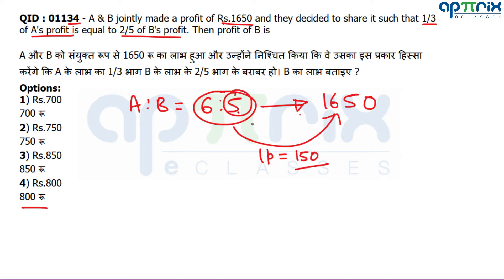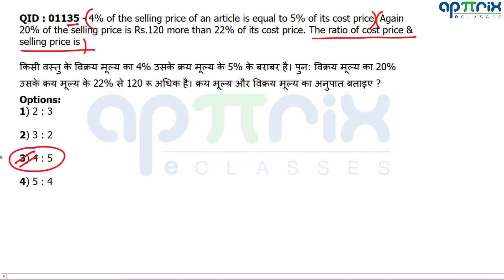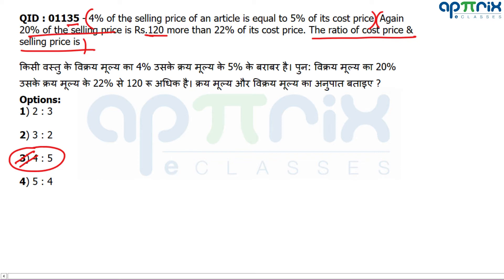B's profit = 5 × 150 = 750. Question number 35: 20% of SP is 120 more than 22% of cost price. The ratio of cost price to selling price — this is a very easy question. The direct answer is 4:5. The second statement is not needed at all. If 4% of SP equals 5% of CP, then CP:SP = 4:5. The extra information given would only be needed if we had to find exact values.